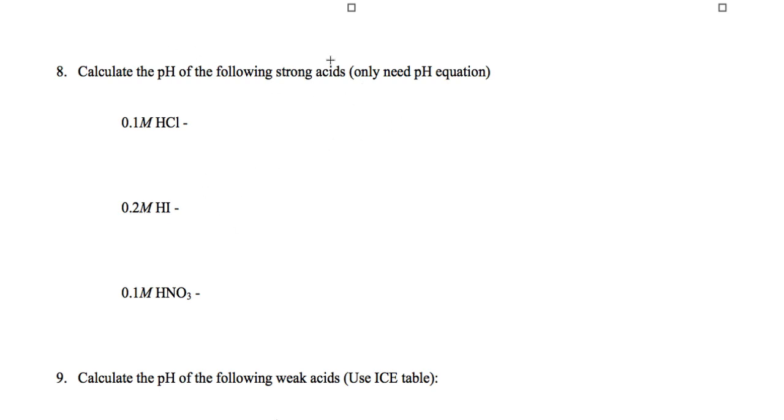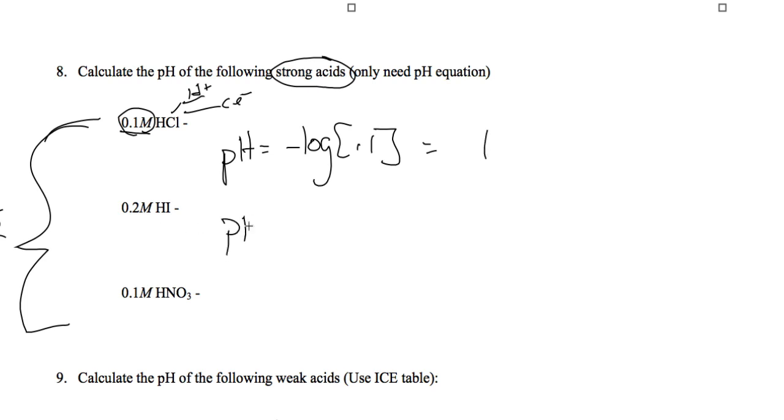Calculate the pH of the following strong acids. So all of these here are strong acids. And when we're dealing with strong acids, all you need to do is take the pH of the concentration of the acid. Because there is no equilibrium, it fully ionizes into H plus and Cl minus. And this concentration represents the concentration of the hydrogen ion. So pH equals the negative log, in this case, of 0.1, which equals 1. In this case, pH equals the negative log of 0.2, which equals 0.7. And in this case, pH equals the negative log of 0.1, which is 1. So it didn't matter what type of strong acid, as long as it was at the same concentration, the pH was going to be the same.